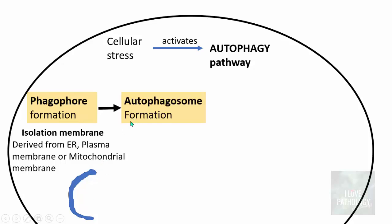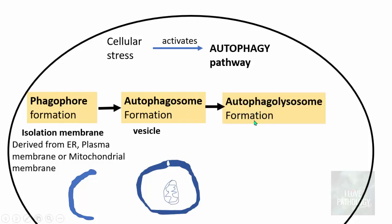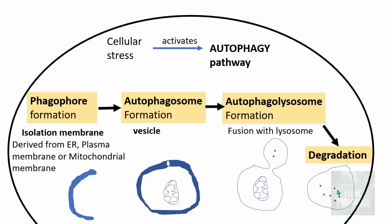This phagophore later gets converted to an autophagosome. An autophagosome is a vesicle — unlike the phagophore which is a membrane, this is a vesicle which contains the intracellular organelles. This autophagosome later fuses with a lysosome to form an autophagolysosome. The lysosome comes and fuses with the autophagosome, and finally there is degradation of the intra-autophagosomal content. That's how the cell digests its own intracellular content.